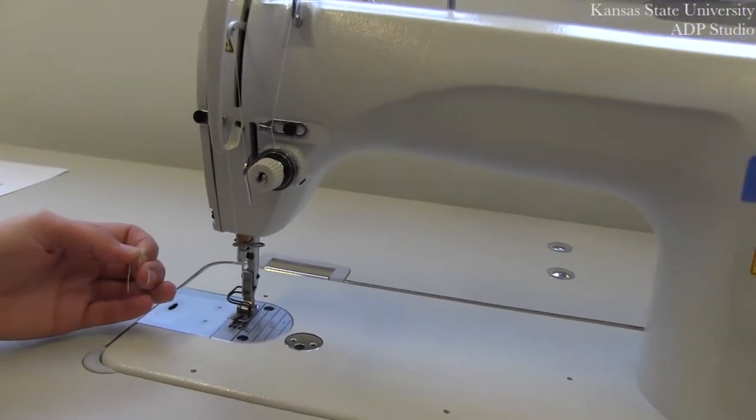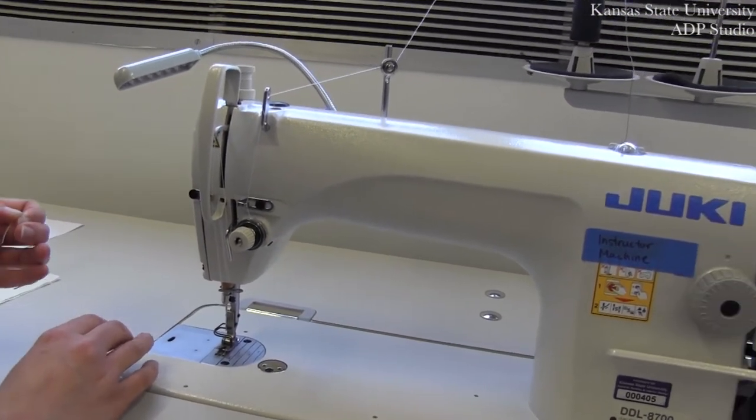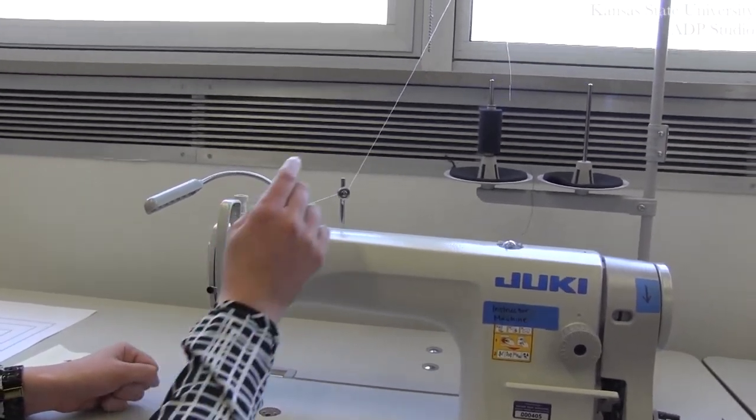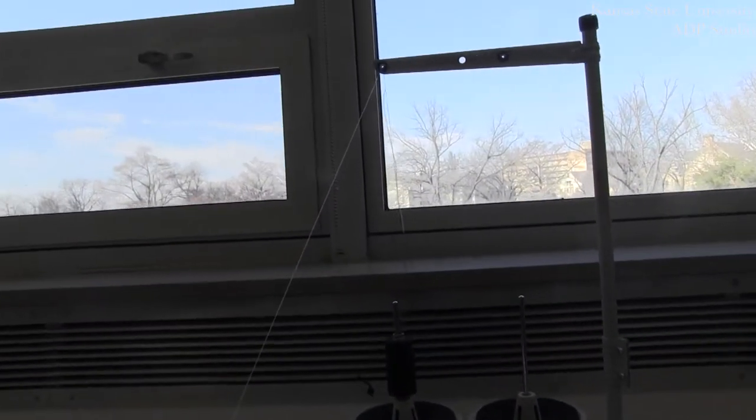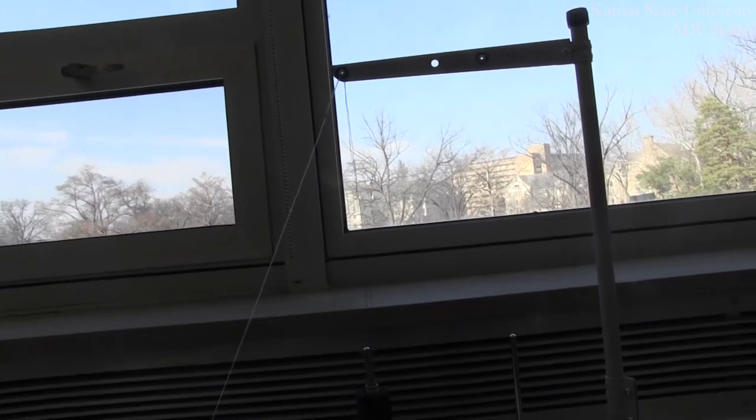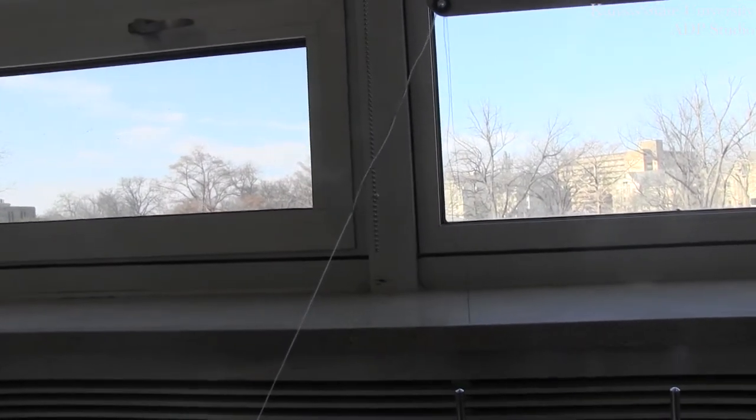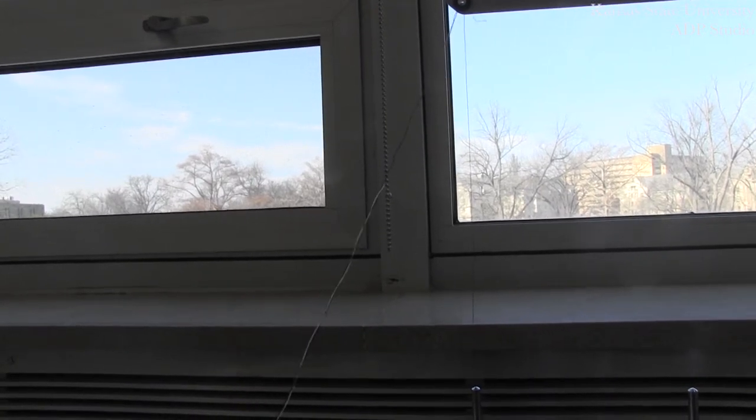From here, you can begin to gently pull on the previous color thread. You will notice that we now have our thread moving through our thread guides. Go slowly to ensure that your knot does not break.